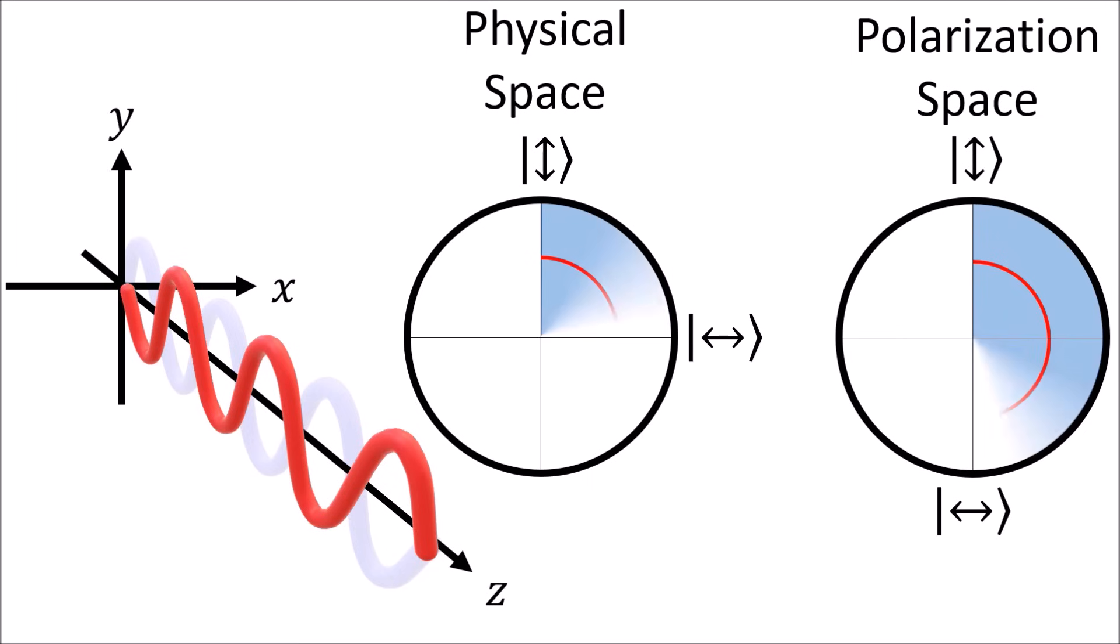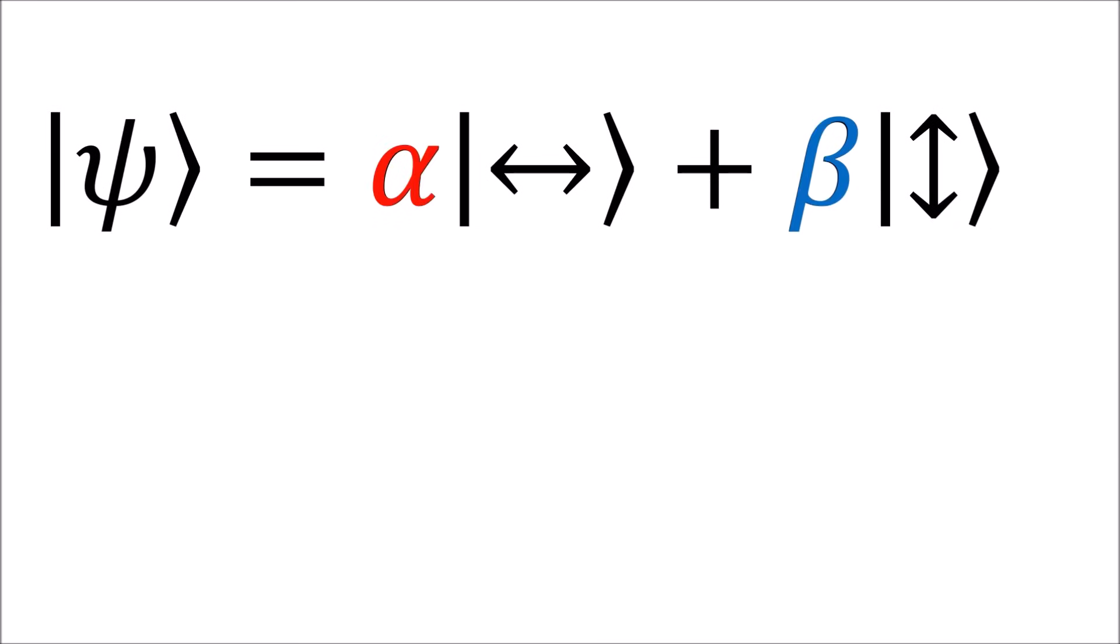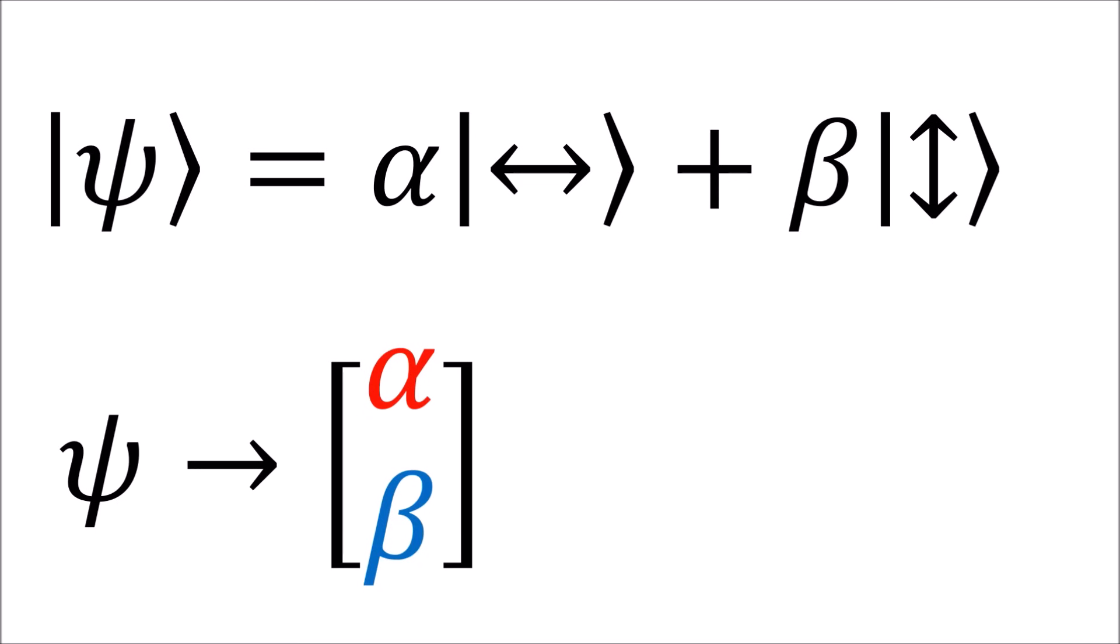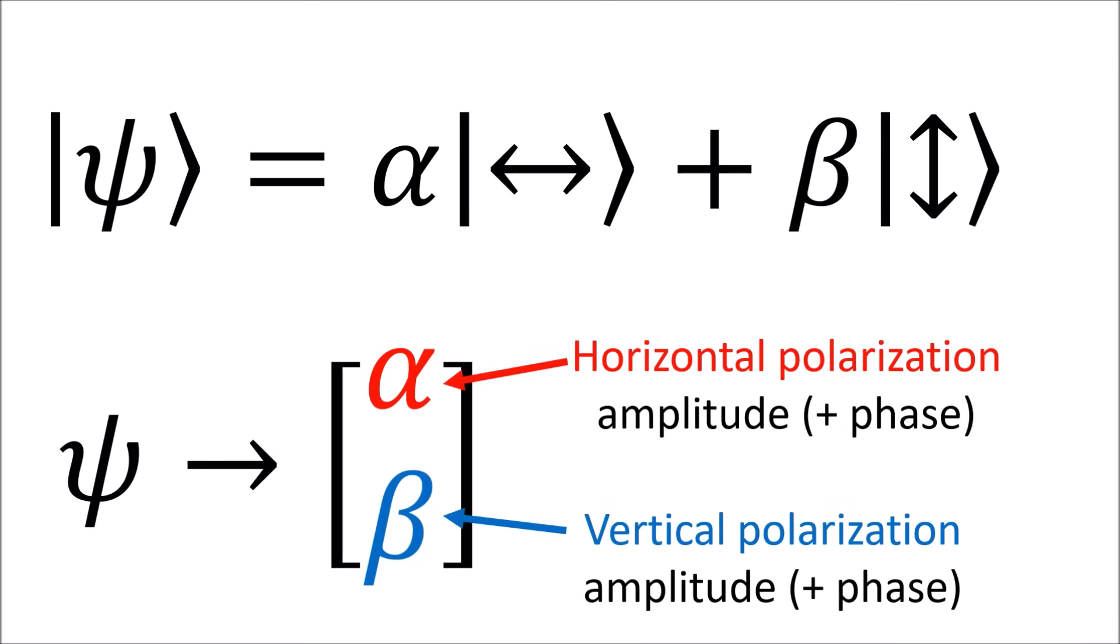A half turn in physical space corresponds to a full turn in the polarization state space. While this is not the exact same as our example with quantum spin states, it does turn out that we can describe polarization states of light using spinors. Once again, we can write the spinor as a two-component column, where the two components indicate the amounts of vertically and horizontally polarized waves inside a given light wave.